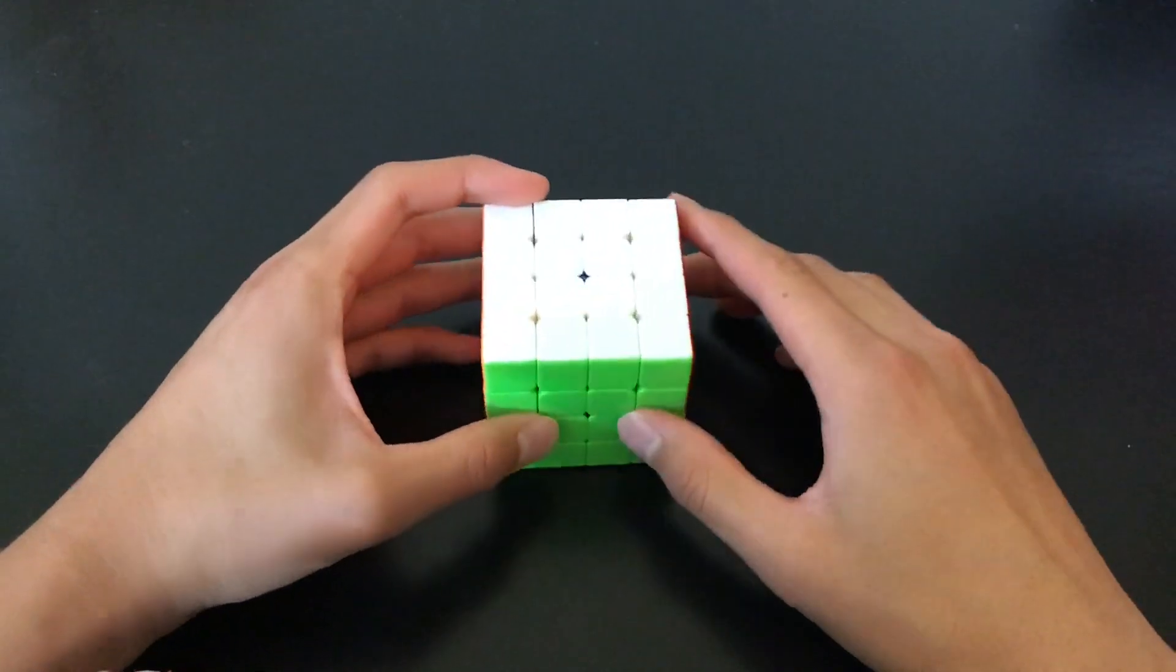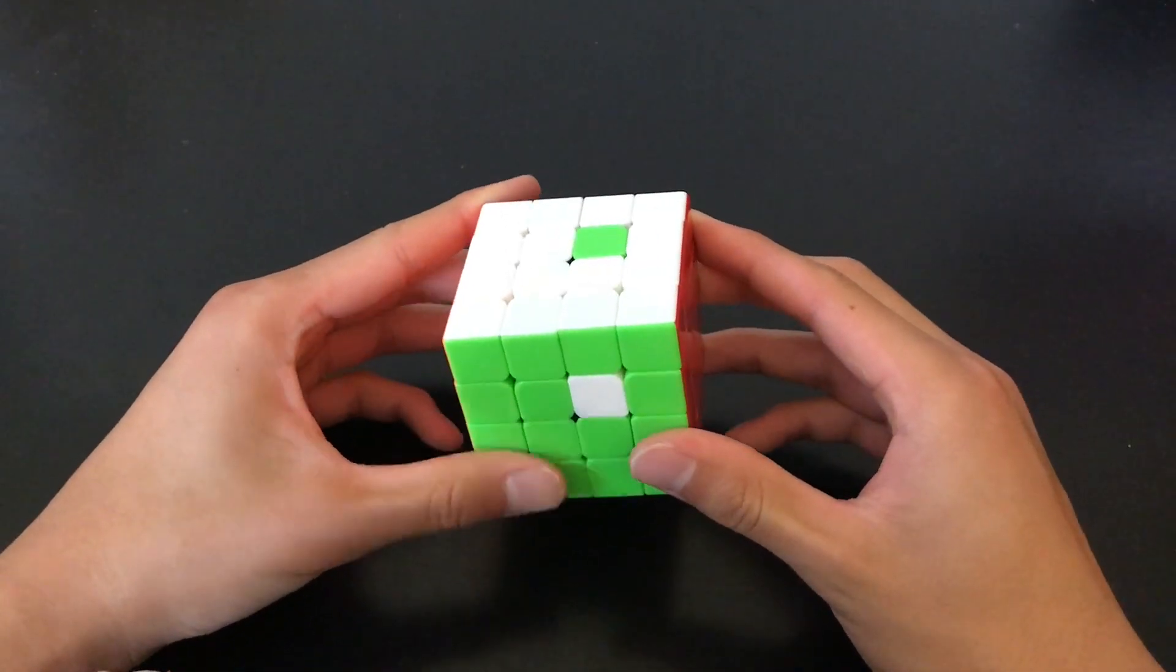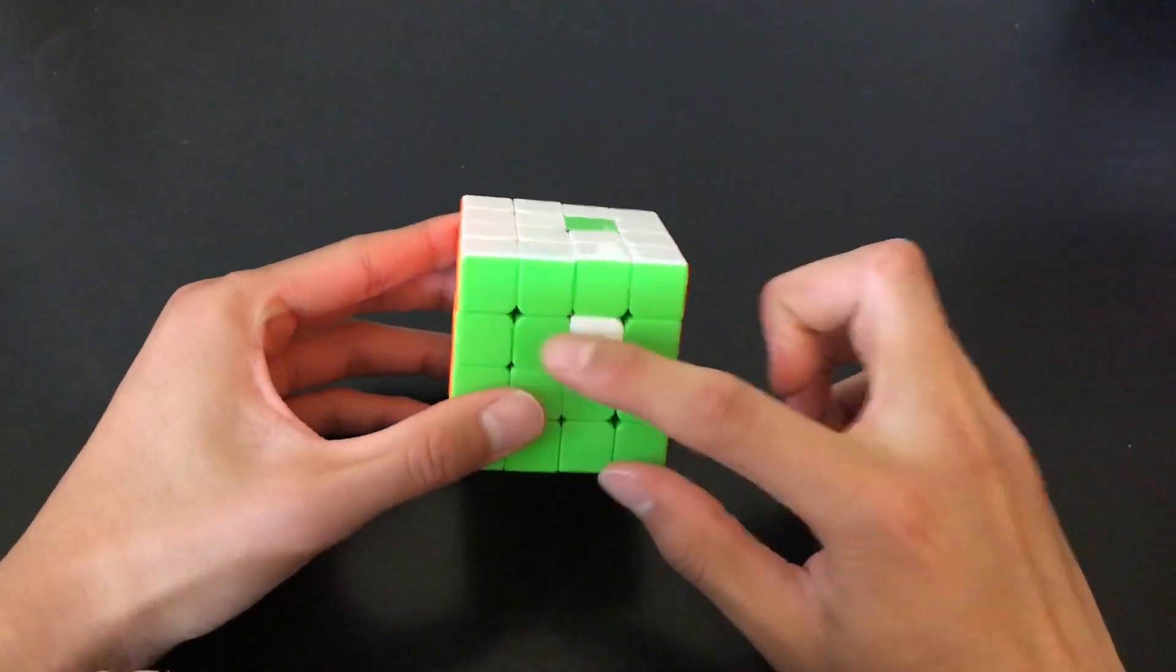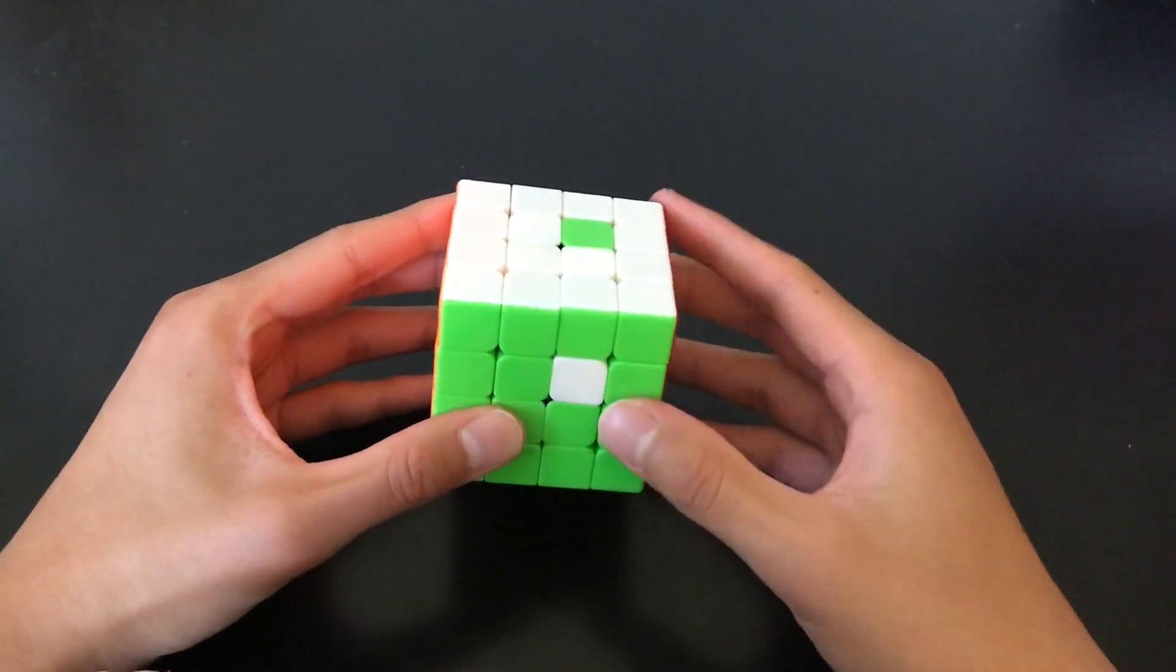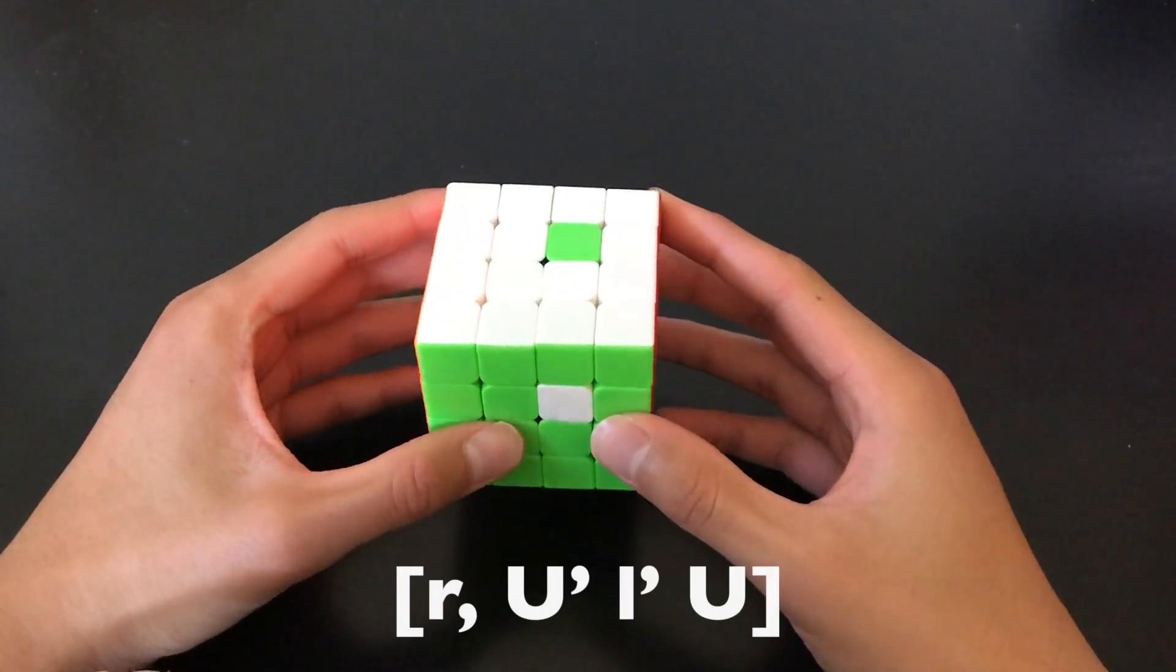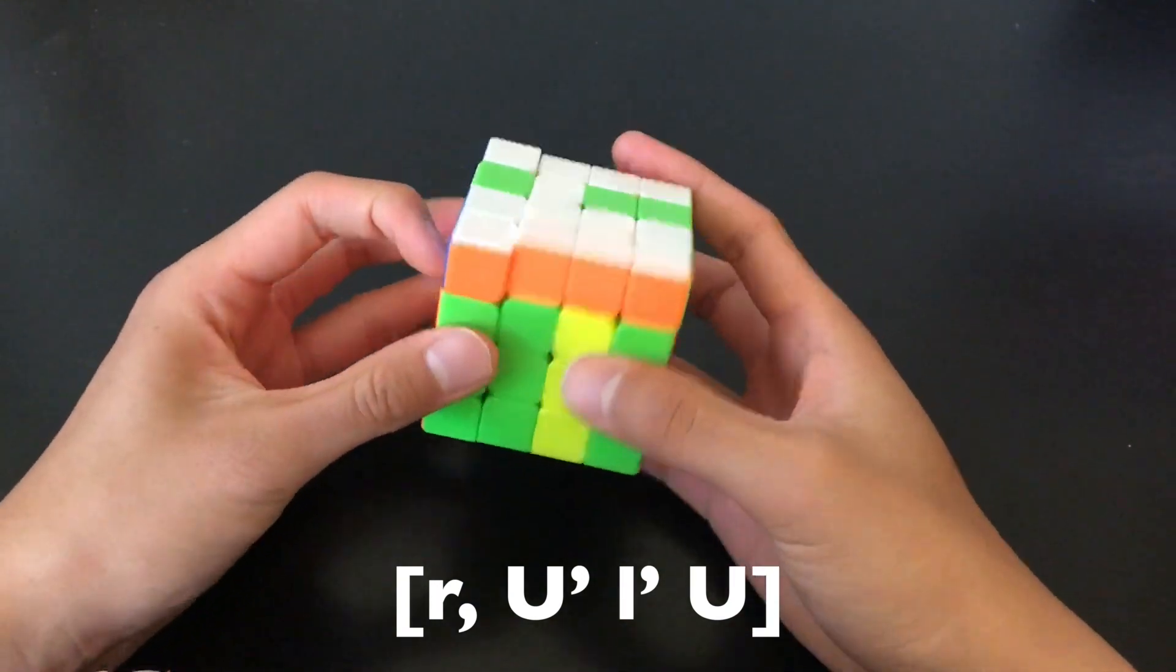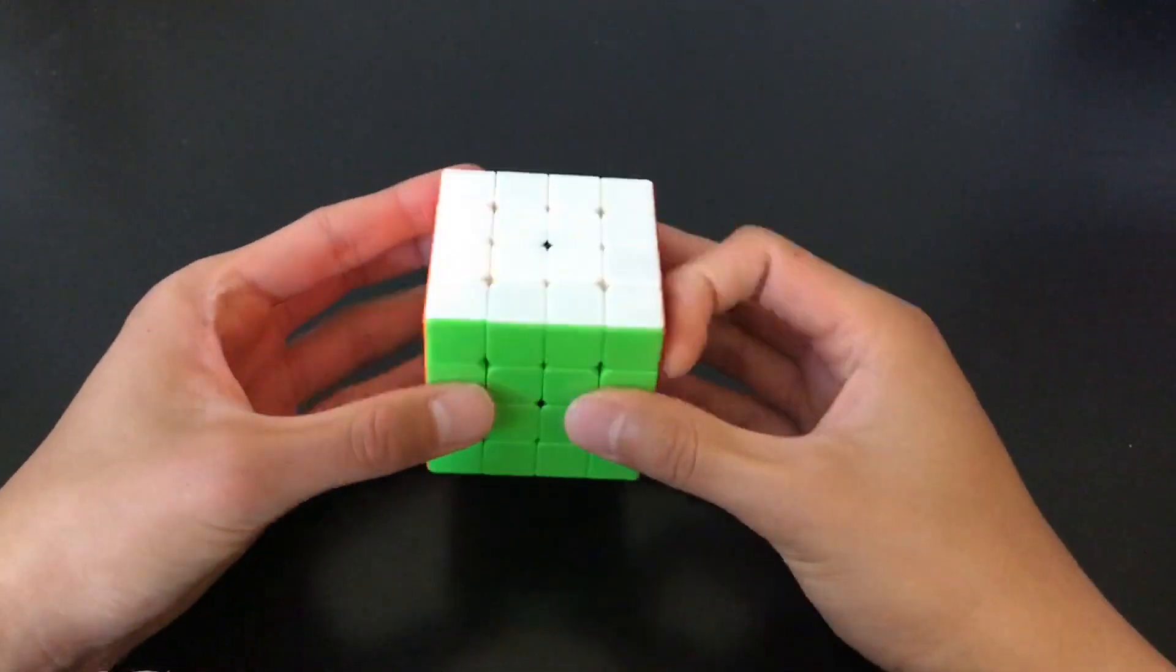If you understand how commutators work, it should be fairly easy to understand how these algs work. It's basically a three-cycle that cycles a solved center. Since the cycle is a solved center, it looks like only two centers were affected. It might be helpful to see this as a comm. Here, we have an R interchange, followed by a U'L'U insertion. Undo interchange, undo insertion.